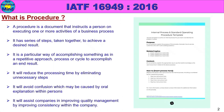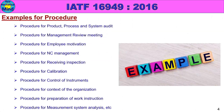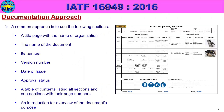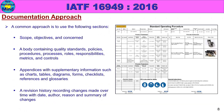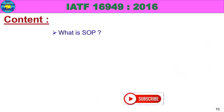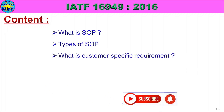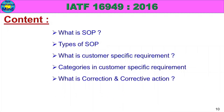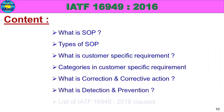In this part, we will cover: what is procedure, examples for procedure, what is turtle diagram, what is documentation, documentation approach, what is quality manual, what is SOP, types of SOP, what is customer specific requirement, categories in customer specific requirement, what is correction and corrective action, what is detection and prevention, and list of IATF 16949:2016 clauses.